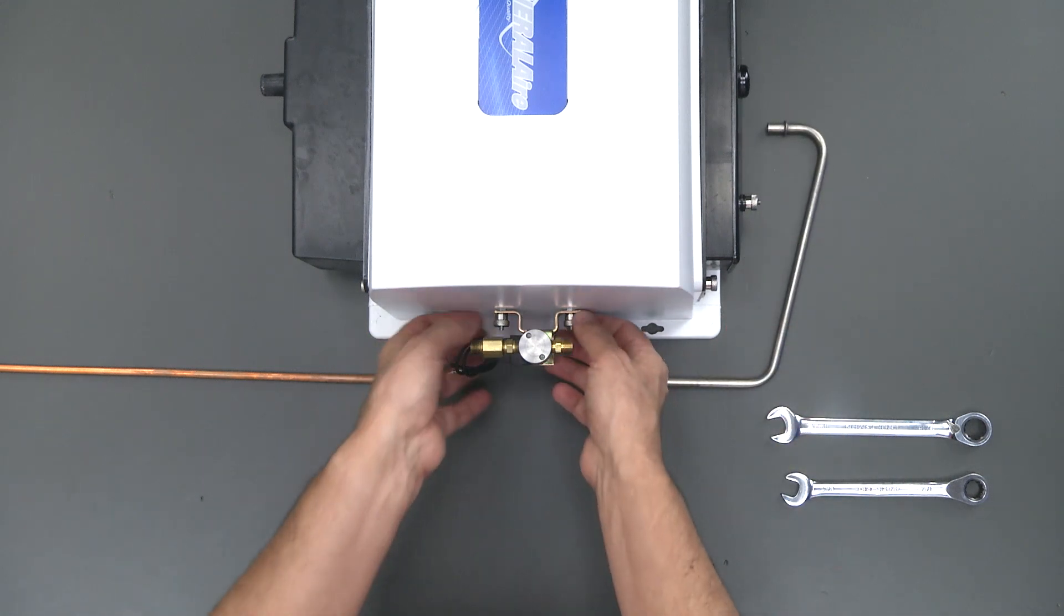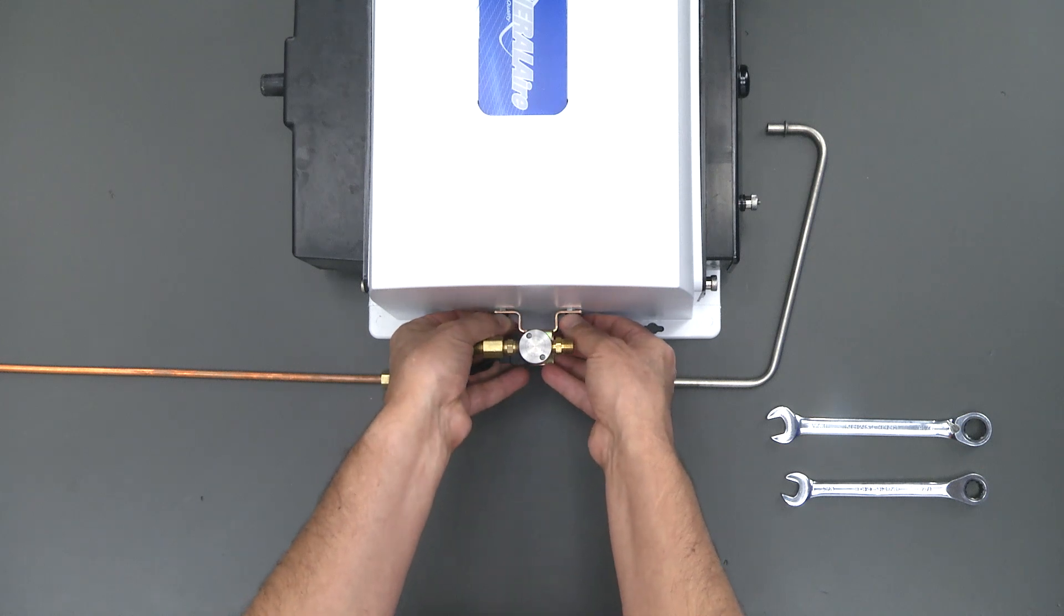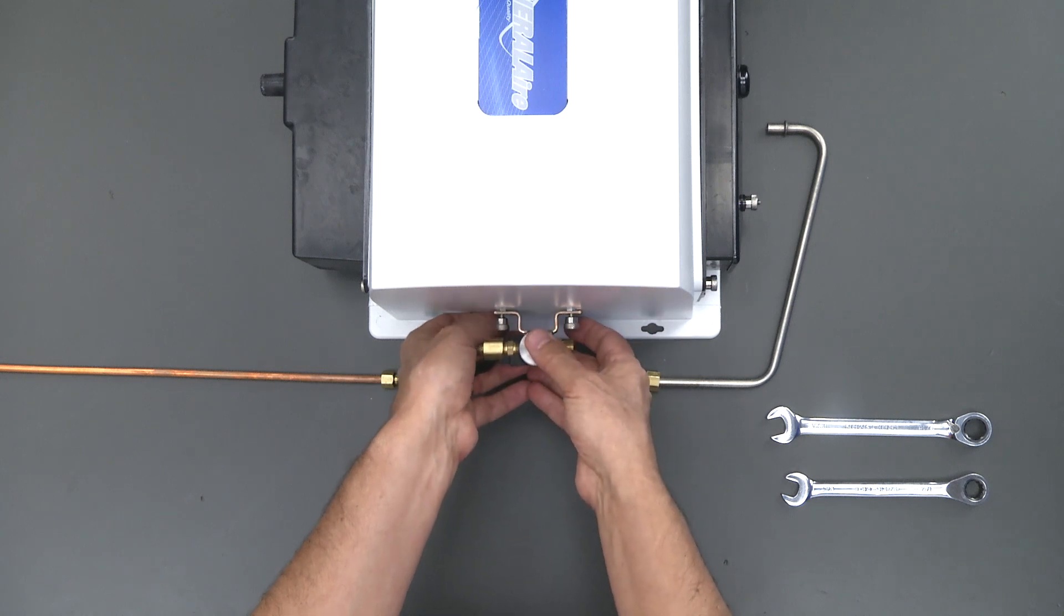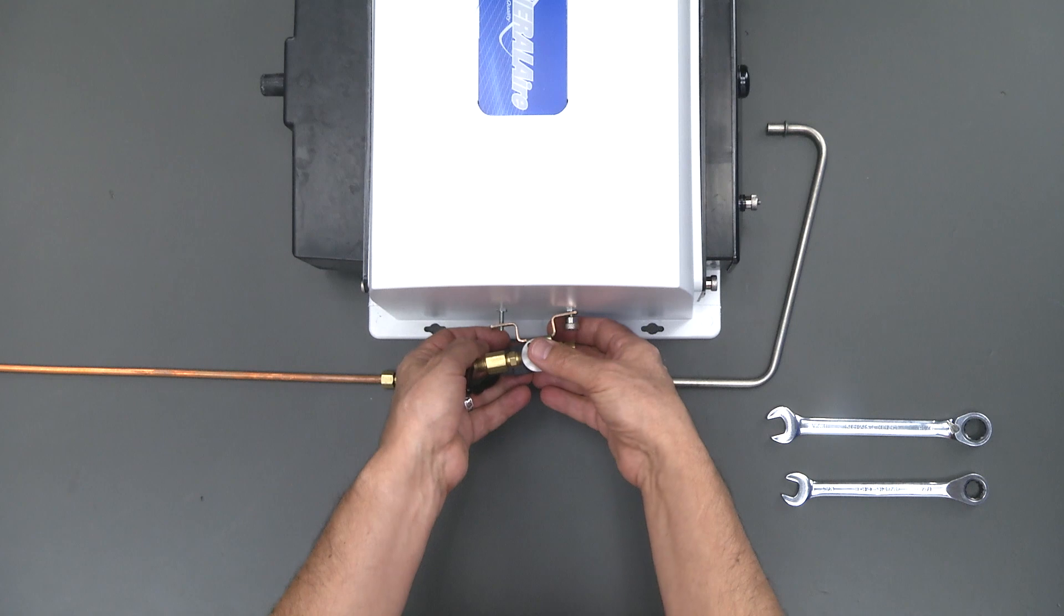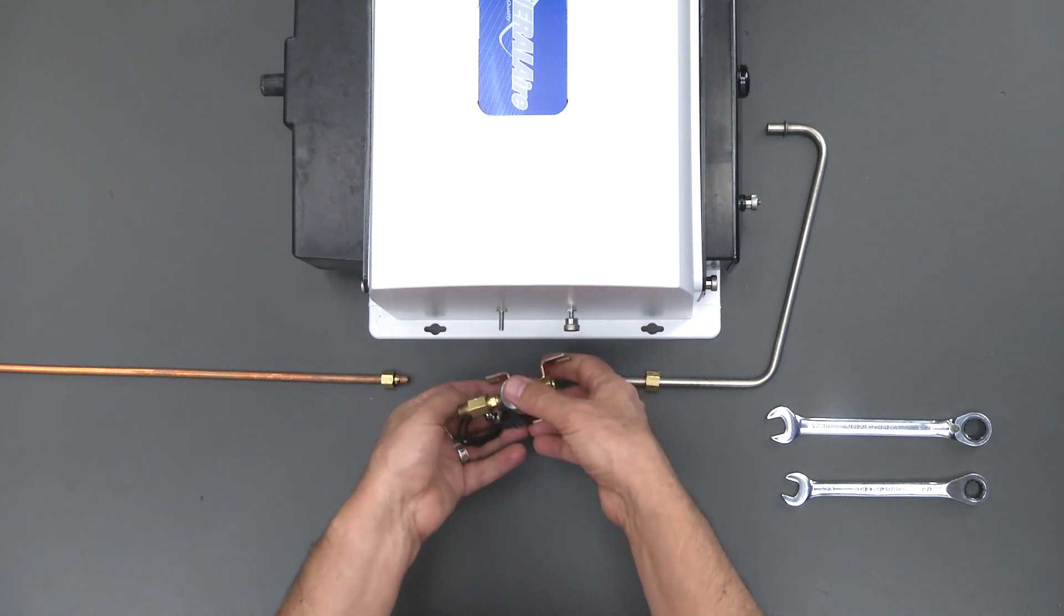Now let's disconnect the valve body. We're going to loosen these two nuts up. It's only necessary to take one of them off, but you need to loosen the other one.